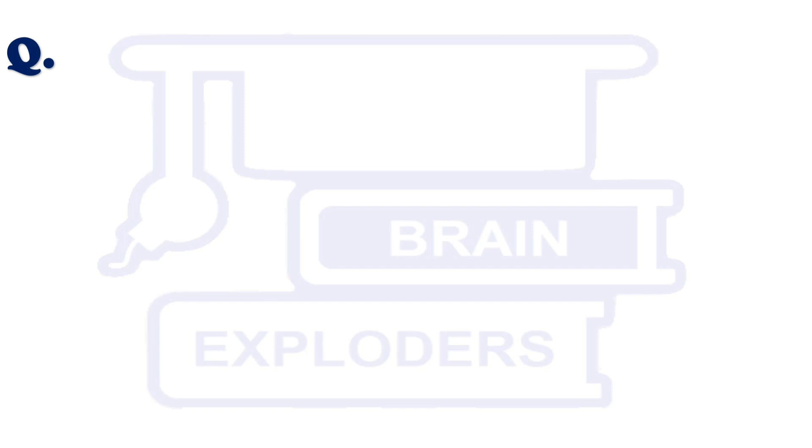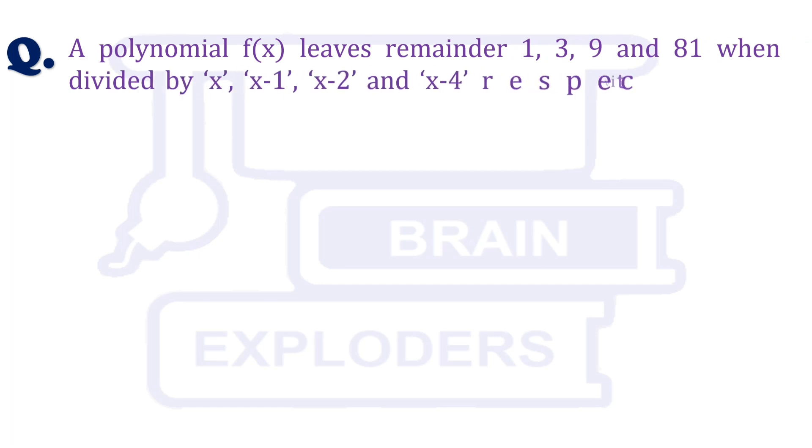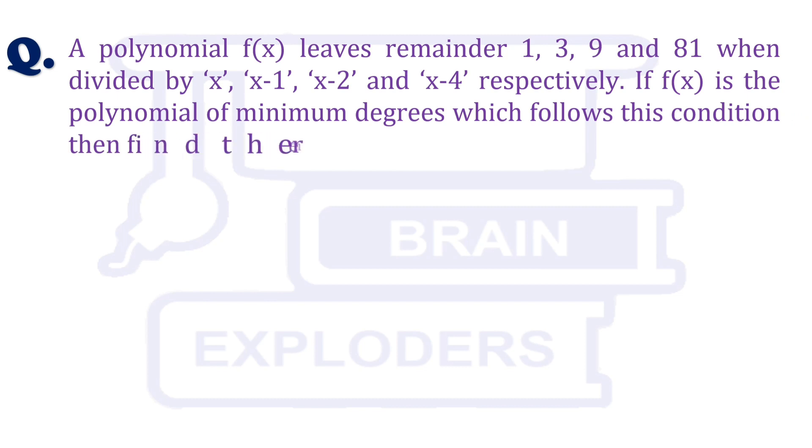Let's move toward another question. A polynomial f(x) leaves remainder 1, 3, 9, and 81 when divided by x, x minus 1, x minus 2, and x minus 4 respectively.